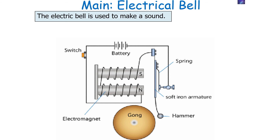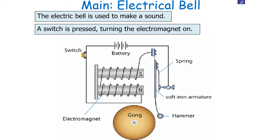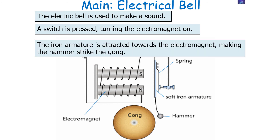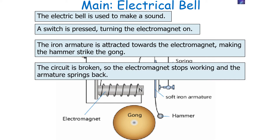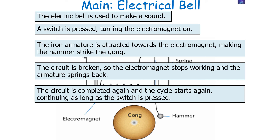Another example is an electrical bell. A switch is pressed to complete the circuit, turning the electromagnet on. This causes the iron armature to be attracted towards the electromagnet, making the hammer strike the gong. At that point the circuit is broken, the electromagnet stops working, and the armature springs back. This completes the circuit again and the cycle repeats for as long as the switch is pressed, producing the repeated bell sound.